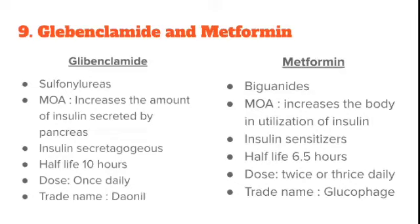Glibenclamide comes under sulfonylureas of oral hypoglycemic agents, whereas metformin comes under biguanides. For mechanism of action, glibenclamide increases the amount of insulin secreted by the pancreas, whereas metformin increases the body's utilization of insulin — stimulating cells to use insulin. That is why glibenclamide is called an insulin secretor and metformin is called an insulin sensitizer.